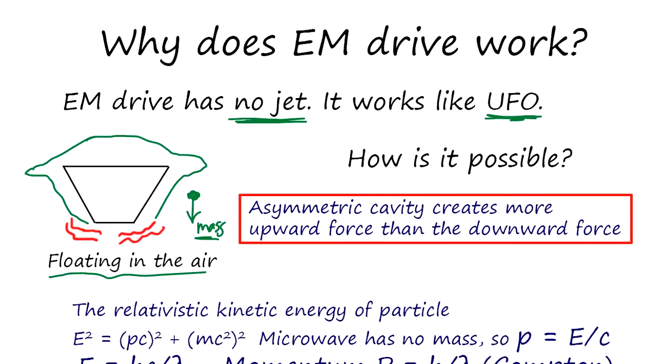Basically, we make an asymmetric cavity. The experiment was already done. The cavity is asymmetric and you inject the microwave inside. The microwave bounces around the wall and the larger wall gets more power than the smaller wall.